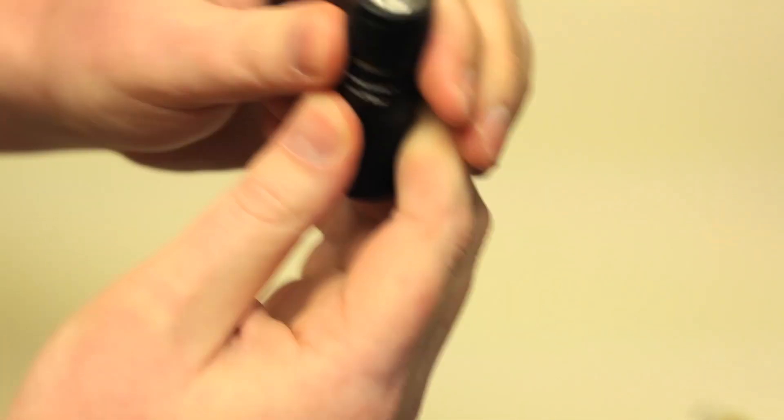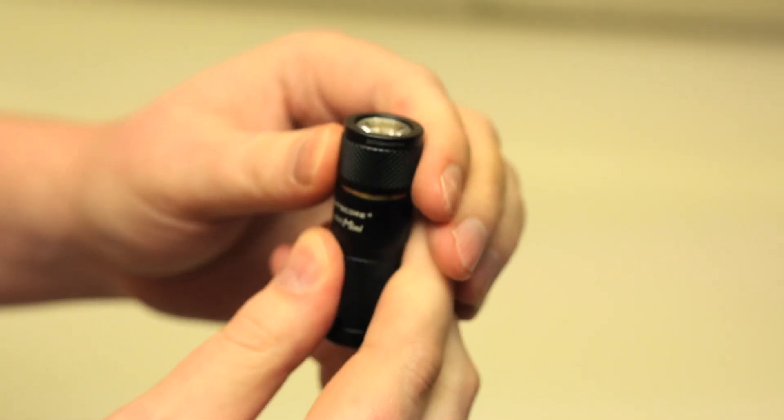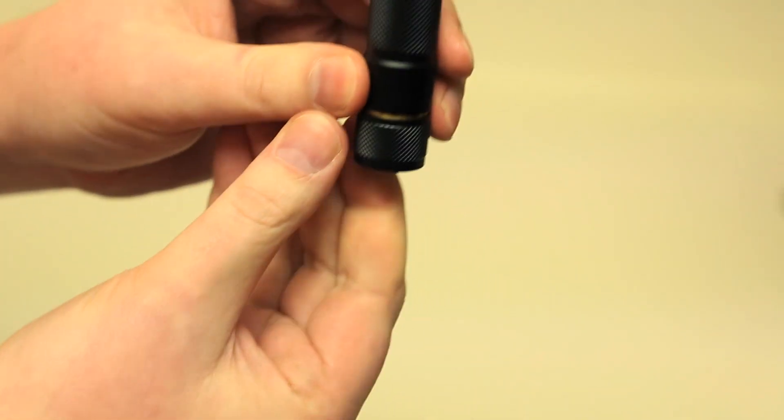And it's got a few settings. If you turn it on with it facing up, you go into auto dimming mode. We'll show you that outside in a second. Turn it on horizontal, it's max power. Turn it on with it down, low power.